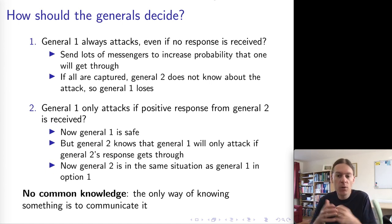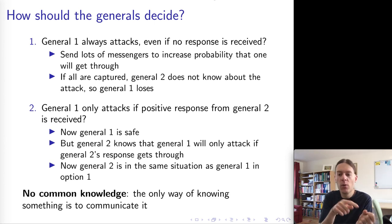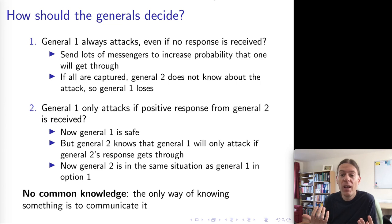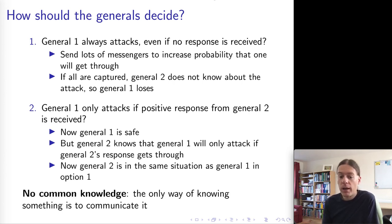This is called in distributed systems the problem of having no common knowledge — there's no knowledge in the system that one node knows, and the other node knows that the first node knows it, and the first node knows that the second node knows that the first node knows it, and so on. The end result is that no matter how many finite sequences of messages we send back and forth, we never actually have absolute certainty. You can build up gradually increasing probabilistic certainty depending on your assumptions, but it's actually impossible to reach complete certainty.